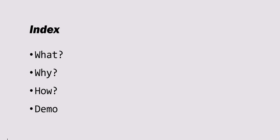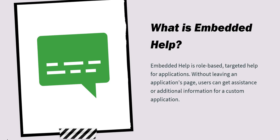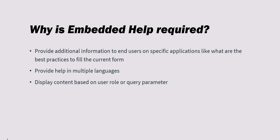Embedded help is a role-based targeted help for applications. If you want to provide help on a specific application, on a form, or on a list, you can use embedded help. Users will not have to go somewhere else to a knowledge article or portal to search for information. Embedded help can be provided on the same page using just a toggle bar, giving additional information for that page where the user currently is.